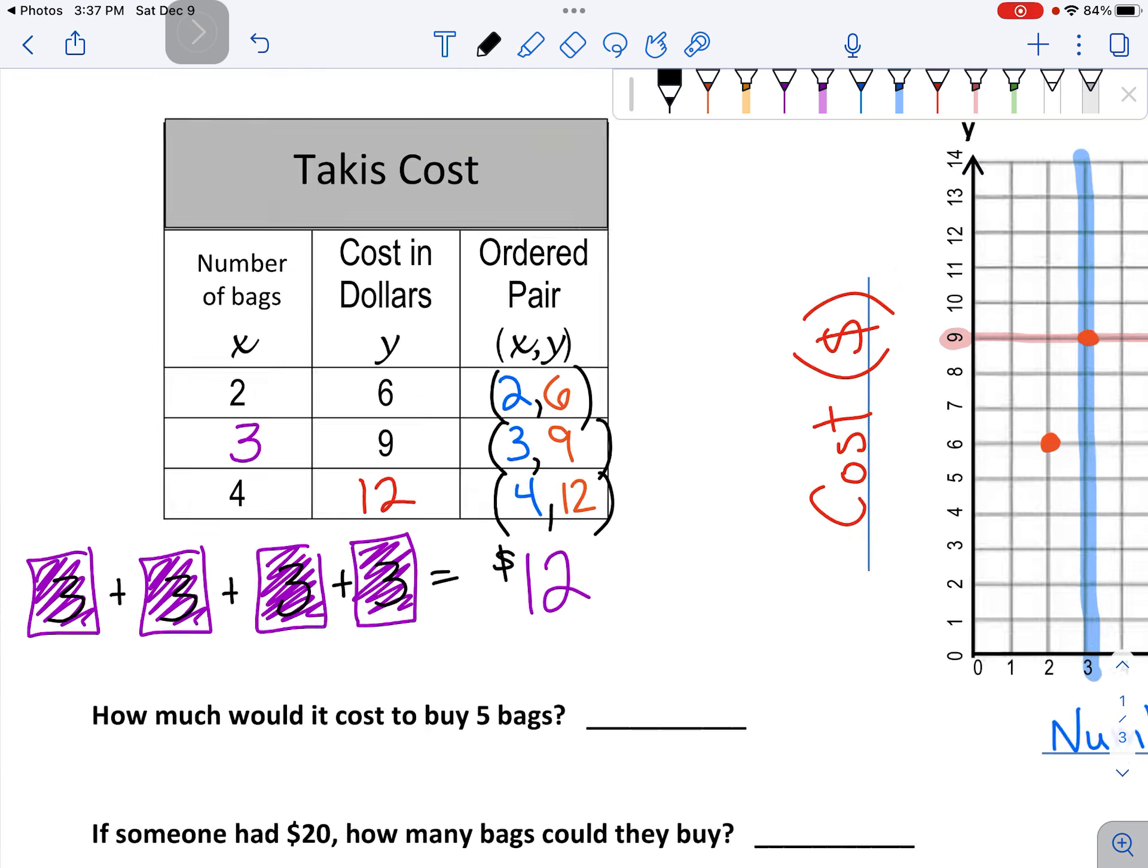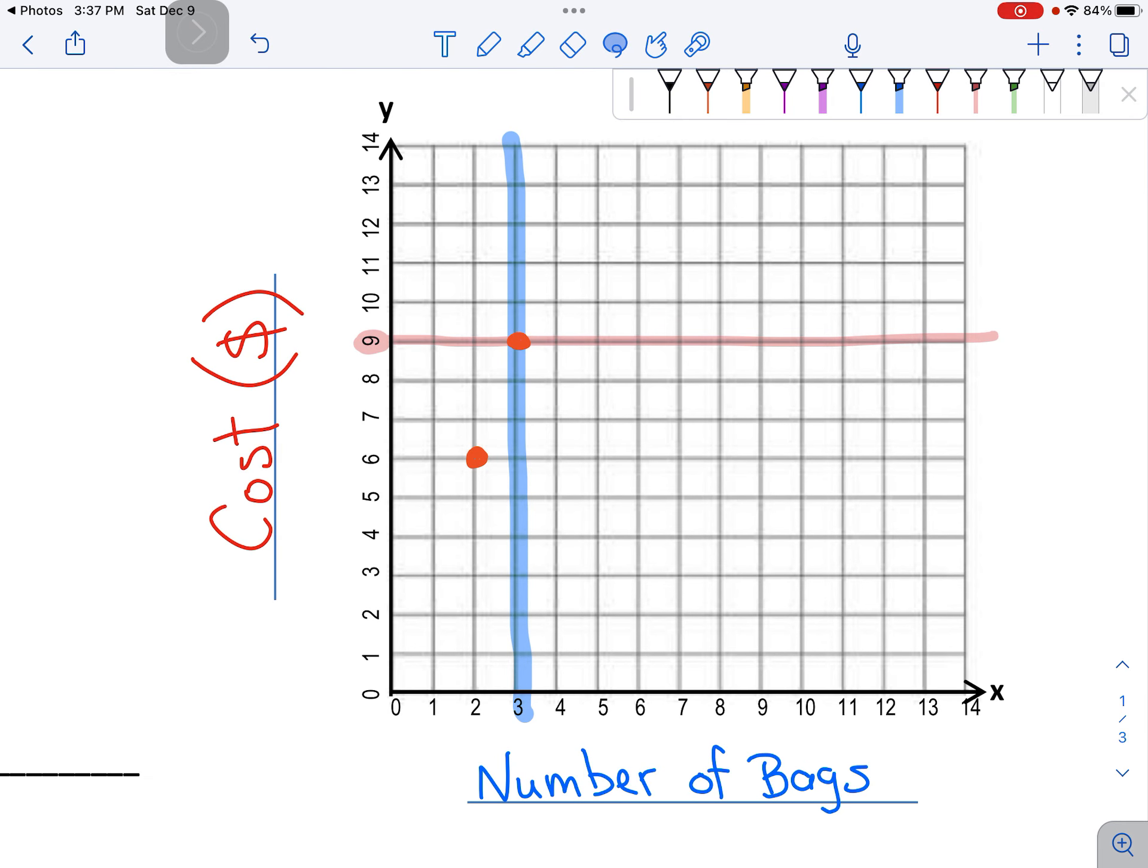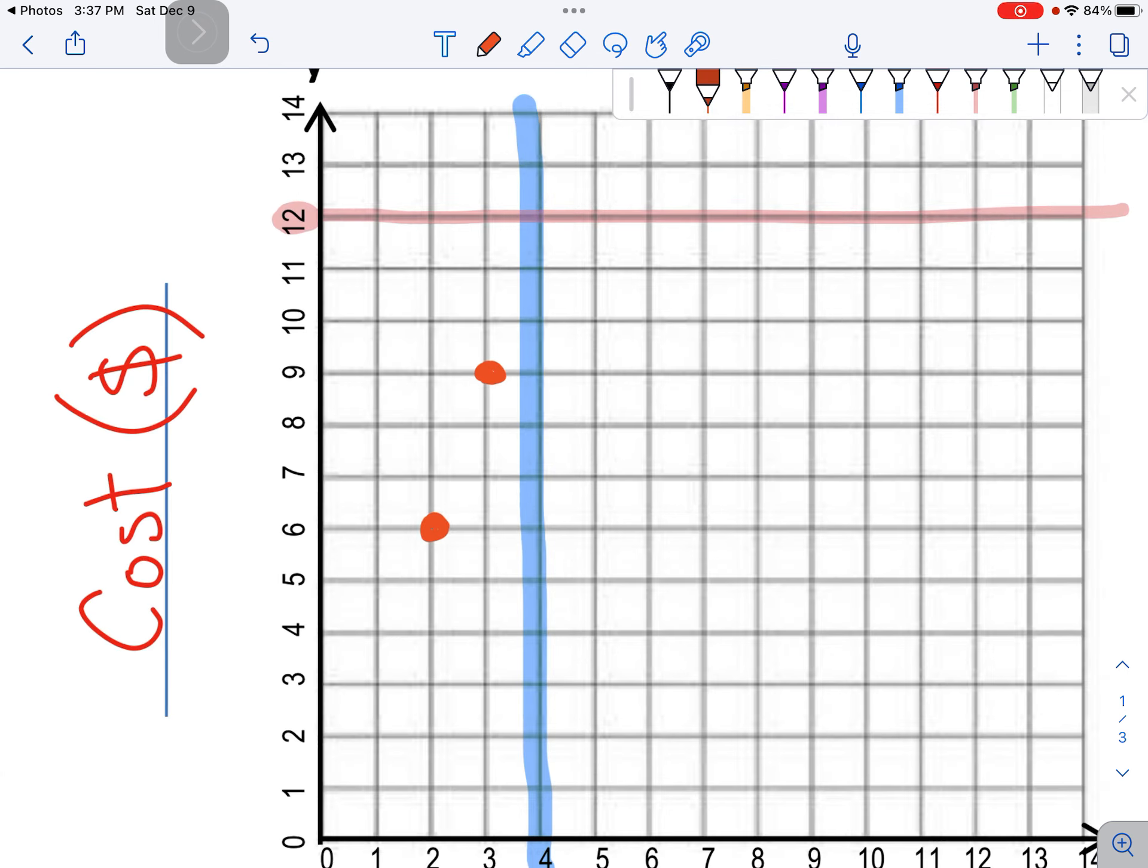And then put that on the graph. This time I'm just going to move my lines. Here's line four for my x. And going up to 12 is here. Now I can put my dot.